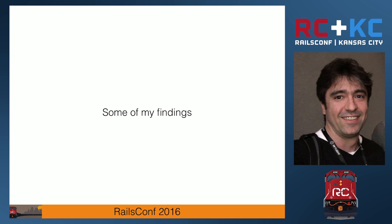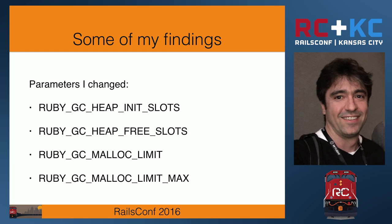Now the next slides are going to be some nice charts. If you guys don't want to do all this work yourselves, you can piggyback on some of these images and send them to your boss — I'm pretty sure your boss will like these charts, and maybe that helps convince them to let you poke around some of this stuff. At the end, these were the parameters I changed that made it all the way to production: heap init slots, heap free slots, malloc limit, and malloc limit max. I'm not sure all of them combined resulted in the improvements — one or two of them combined was likely the key — but after a lot of testing, those are the ones I decided to put into production.